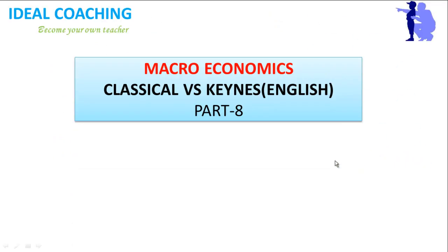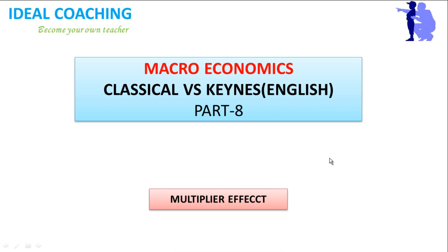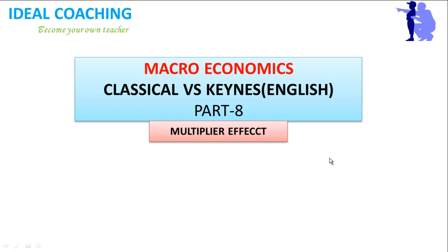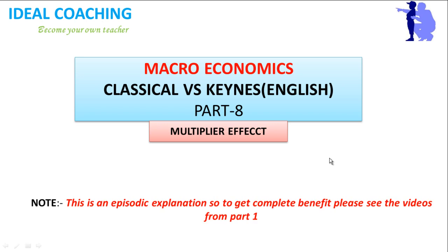Hello everyone, welcome to Adult Coaching. This is Krishnakan Singh Mundela. In macroeconomics — Classical vs. Keynes — this is Part 8, in which we are going to study about the multiplier effect. This is a dubbed video from the Hindi version I made earlier, so it might be a little disturbing, but it is okay to understand and clear in sound. It is an episode explanation, so please see the videos from Part 1 for complete benefit.